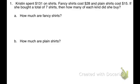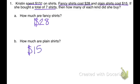For fancy shirts, we need to know how many she bought. Reading the problem again: she spent $131 on shirts, fancy shirts cost $28, plain shirts cost $15, and she bought a total of seven shirts. I try to group these equations by the topics we're talking about. We just answered two questions that deal with price. So if they're dealing with price, I've got to set them up so that everything in that equation involves price.